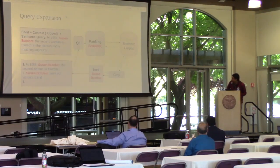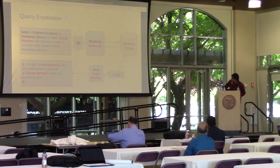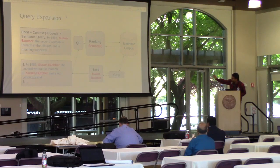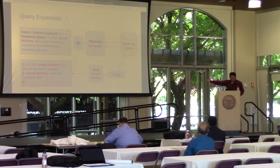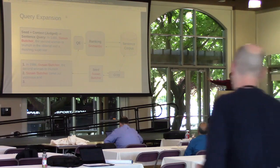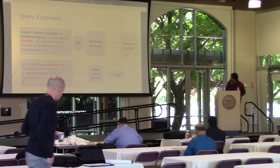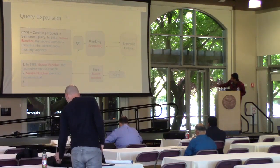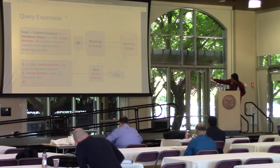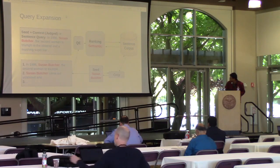To push things further, we did a query expansion approach where we searched the sentence corpus with the name Susan Butcher, retrieved all the sentences about Susan Butcher, and then constructed a query out of it using our proposed query expansion technique — you can see more details in the poster. After ranking, we used the same semantic matching process and obtained the ranked list of sentences.